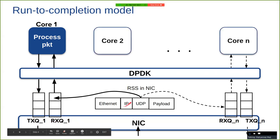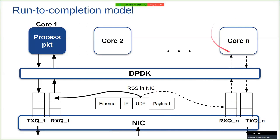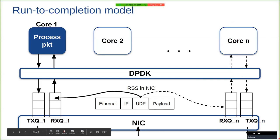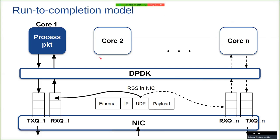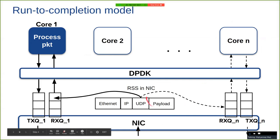Similarly, any other packet may be redirected to any one of the RX queues and any one core will take up that packet in the user space, process, and then transmit it out. Scaling or launching multi-core applications is very easy — we just have to launch the same code across different cores, and the packet distribution is done in the NIC itself via RSS.